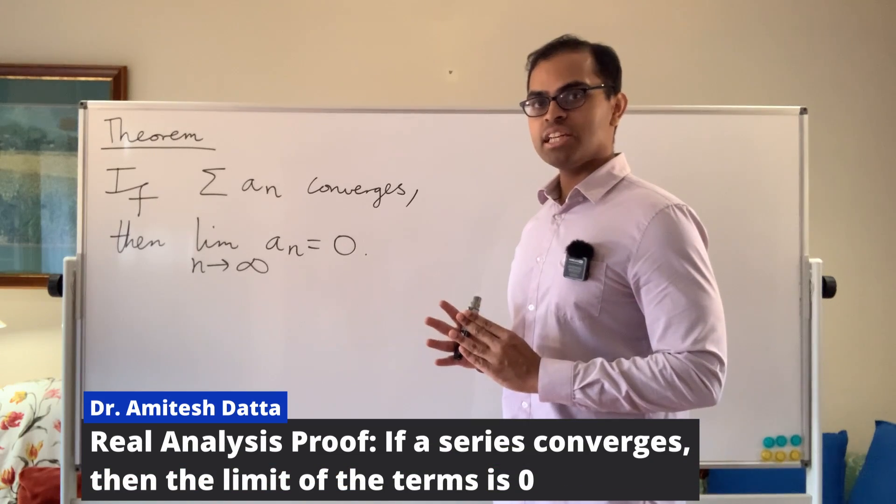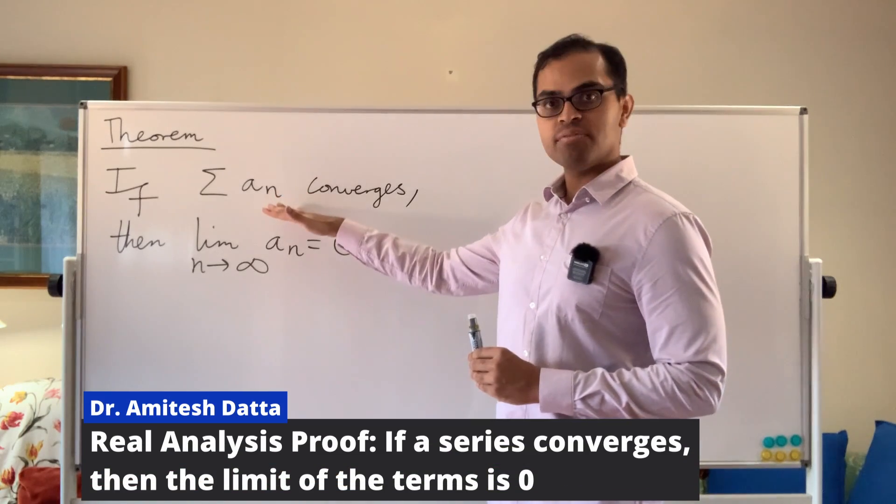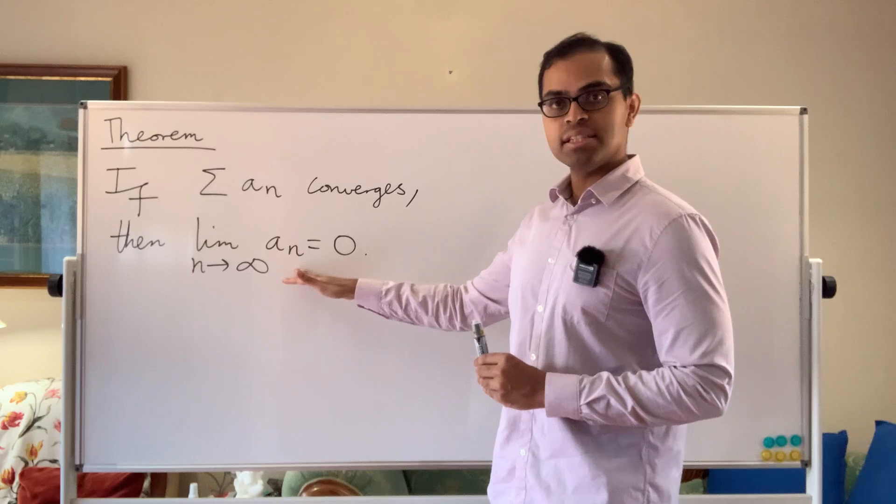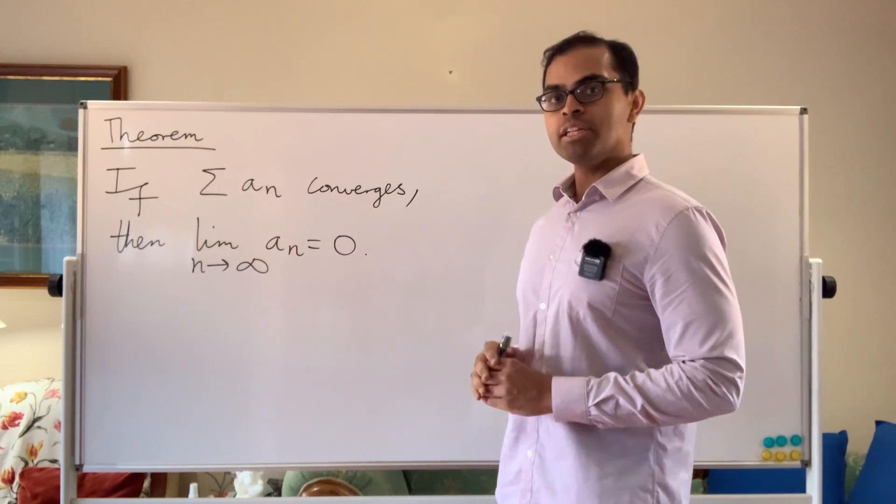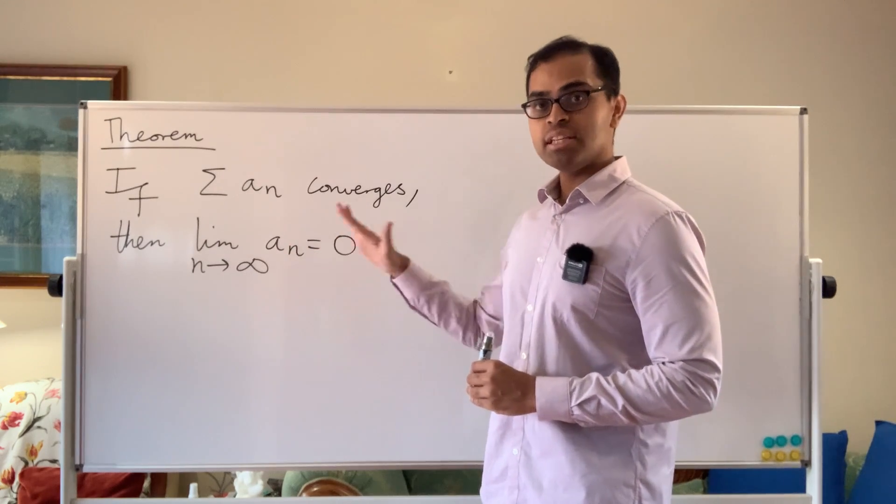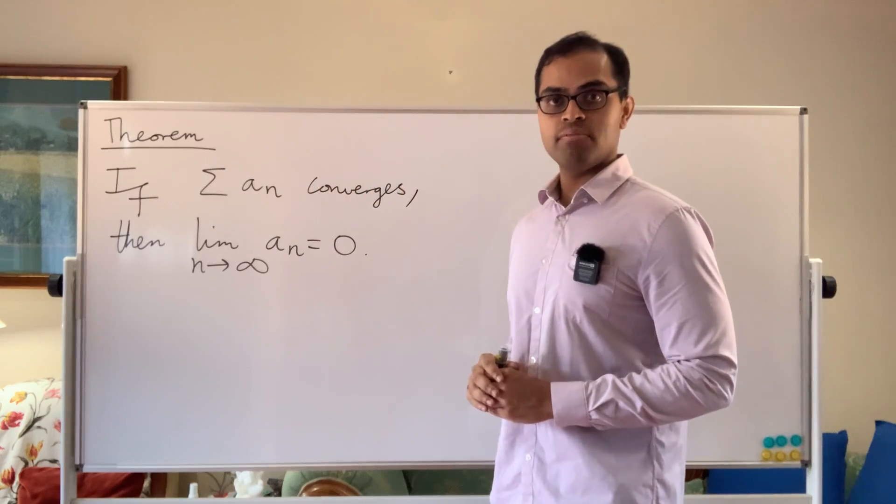We're going to establish the most basic convergence test for series, that if sigma a_n converges, then the limit of the terms in the series must equal to 0. So in particular, if the limit of the terms in a series is non-zero, you know that the series can't possibly converge.